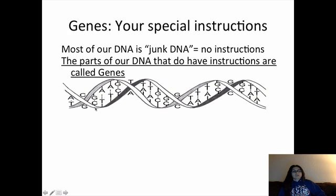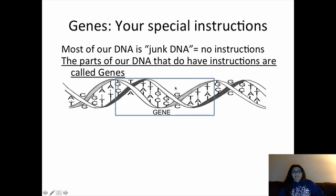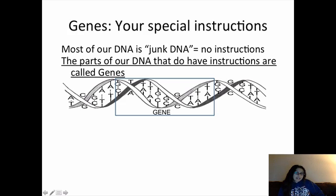Let me show you an example. Let's say this is a piece of our DNA — A's, G's, T's, and C's spelling out different things, with base pairing rules A to T and G to C. Not everything in our DNA is instructions for making a protein. The sections that do have instructions for making proteins are called genes. Maybe this sequence from here to here has instructions for making a protein — all the other stuff is just junk DNA. That's where the term gene comes from.